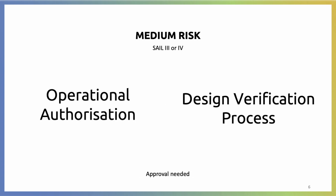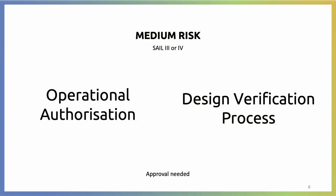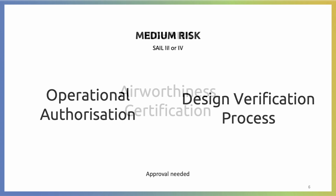In case the resulting SAIL number is a three or four, you'll be operating in the medium risk. For operating in medium risk, you will have to conduct what we call the operational authorization. And this time, you will have to submit this documentation to the National Aviation Authority and wait for their approval. It is also possible that the National Aviation Authority should require the design verification process of the whole aircraft or one of the subsystems. This evaluation is a separate procedure through which you will certify that the aircraft meets the necessary specifications to be able to operate safely in the requested scenarios.